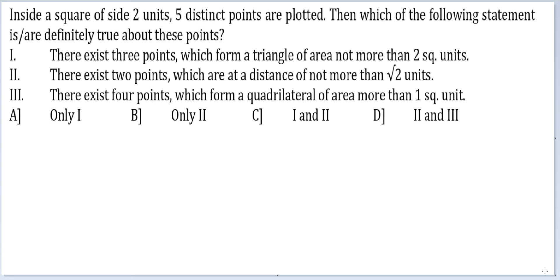Let's look at this question. Inside a square of side 2 units, 5 distinct points are plotted. Then which of the following statements are definitely true about these points? And then you are given certain statements.